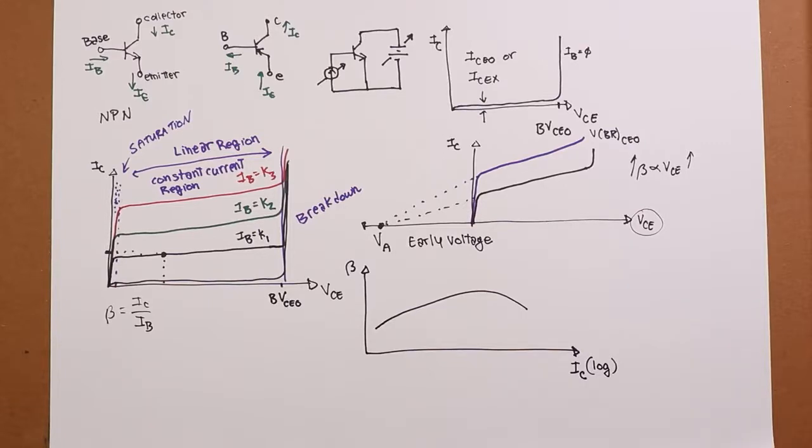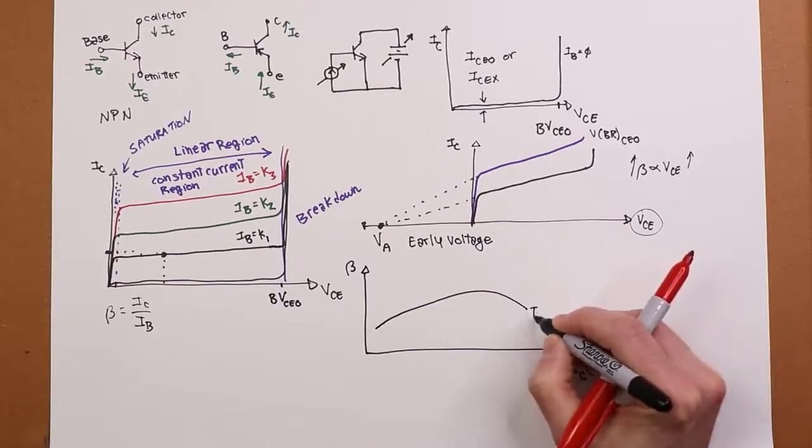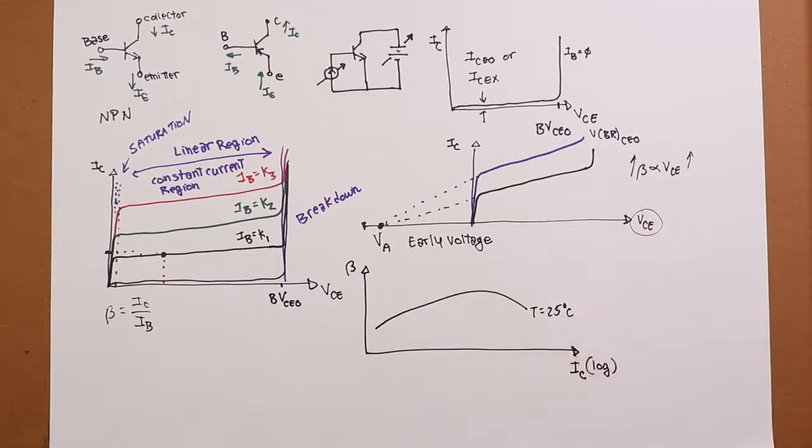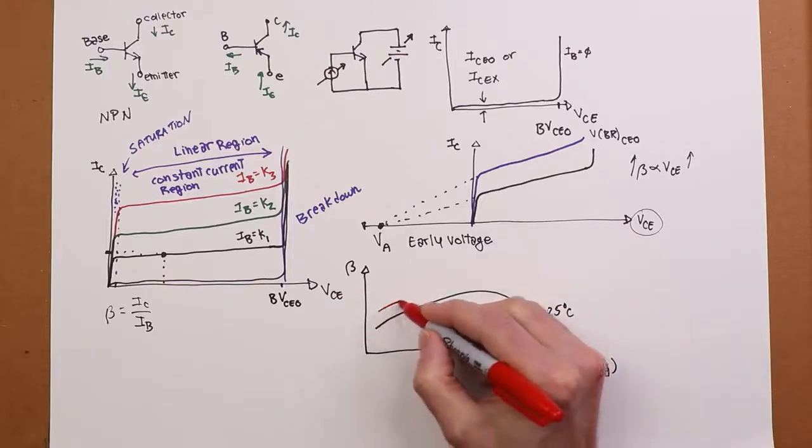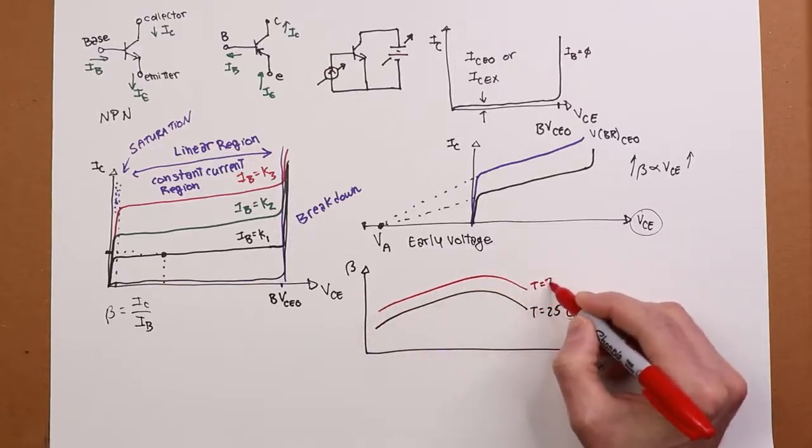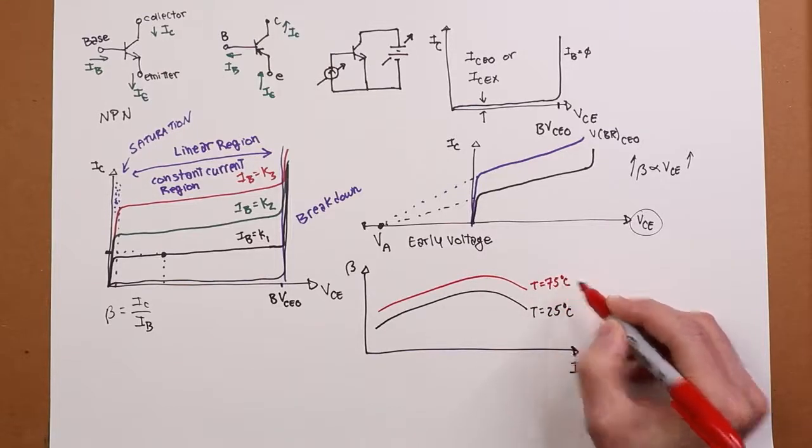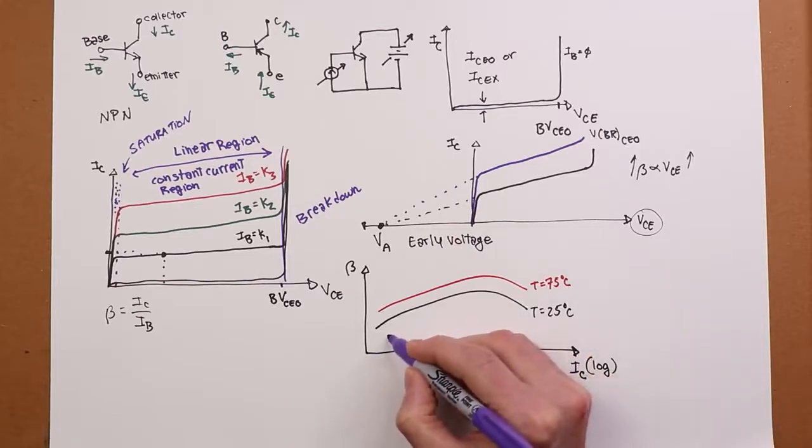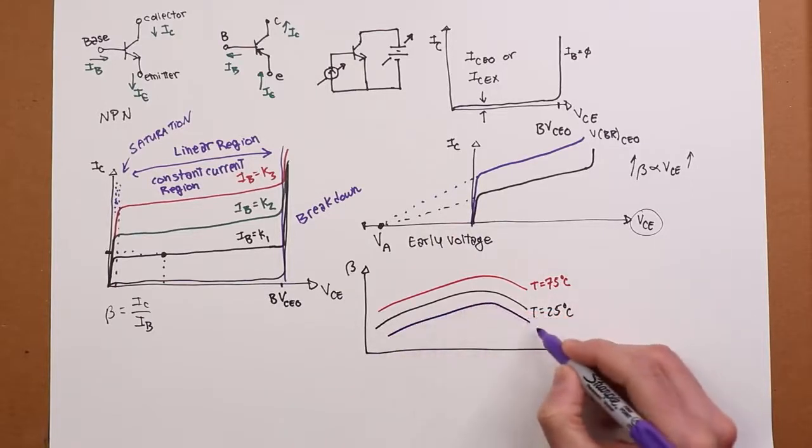Now, what's interesting about this, there's also a function of temperature here. If we heat this up, so first of all, this might be at 25 degrees Celsius, sort of a warm room temperature, low 80s Fahrenheit. If we were to crank this up to maybe 75 C, you might get a curve like this. So, the betas are higher. And then, as you might guess, if we were to cool it down, maybe to zero, to freezing, then we might get this.